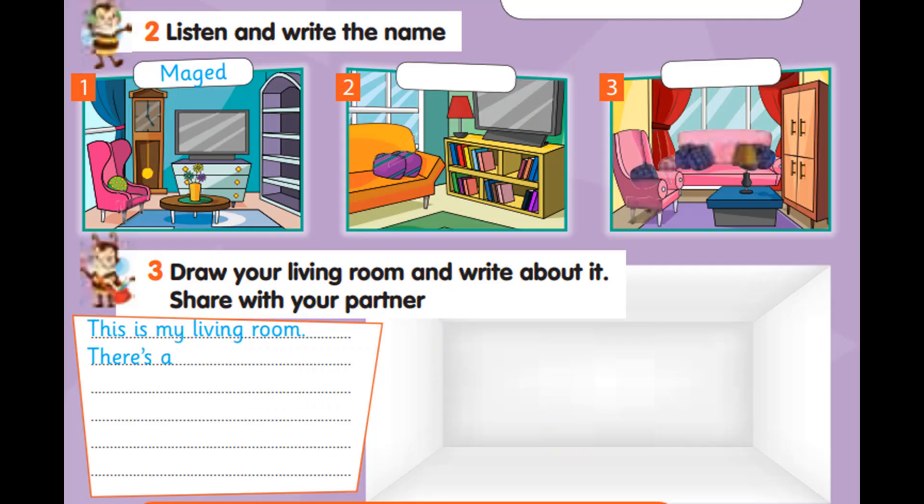Unit 4, page 60, Exercise 2. Listen and write the name. What's in your living room, Nagwa? There's a beautiful lamp next to the TV, and lots of books on the bookcase. What's in your living room, Tarek? There's a big armchair for my dad, across from a cupboard, and a lamp on the table. What's in your living room, Mergid? There's a TV next to a bookcase with no books, and a big clock next to the armchair.